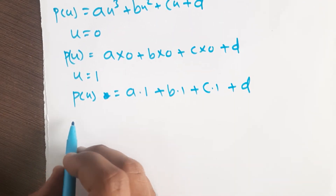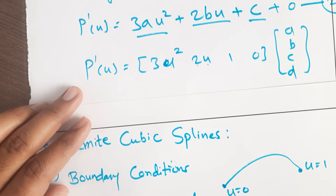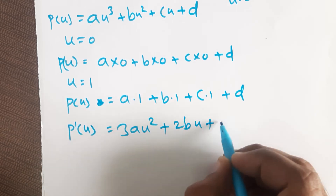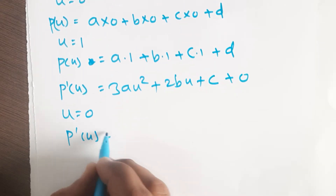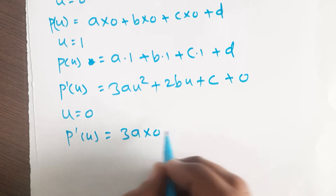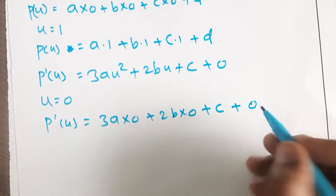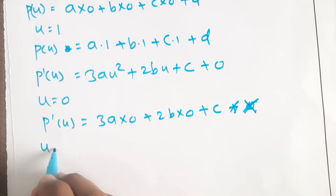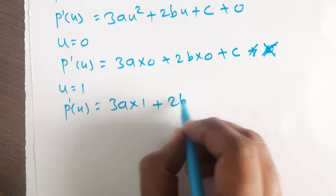Now for p'(u): rewriting, p'(u) = 3au² + 2bu + c (the d term becomes 0). If we put u = 0, p'(0) = 3a(0) + 2b(0) + c = c. If we put u = 1, p'(1) = 3a(1) + 2b(1) + c.